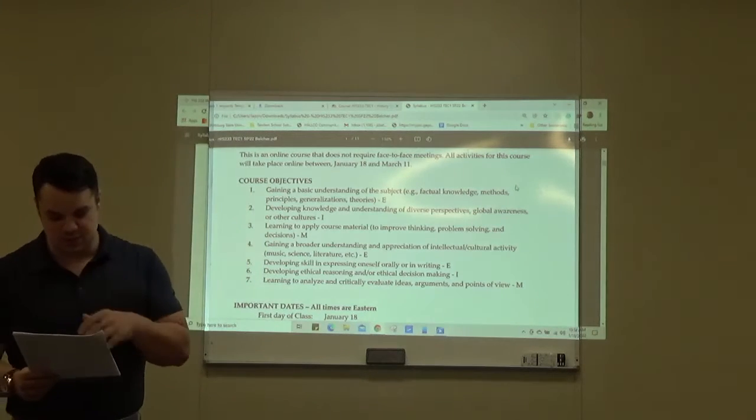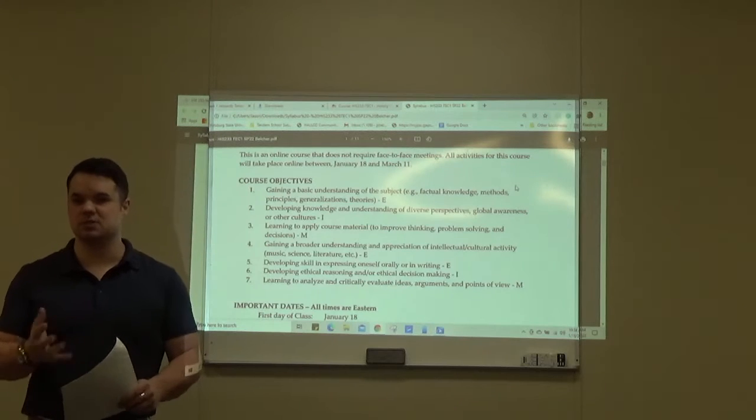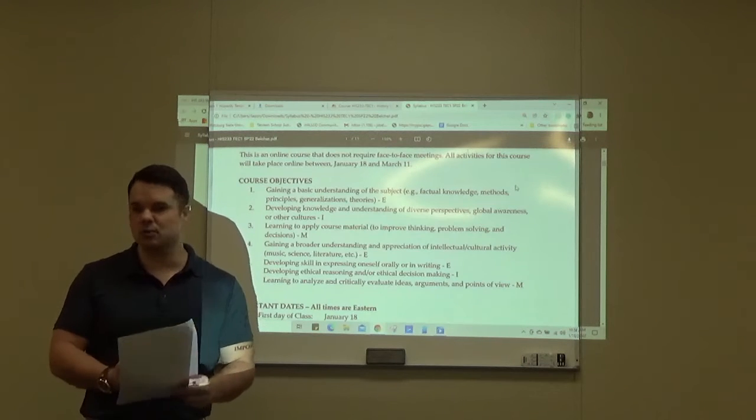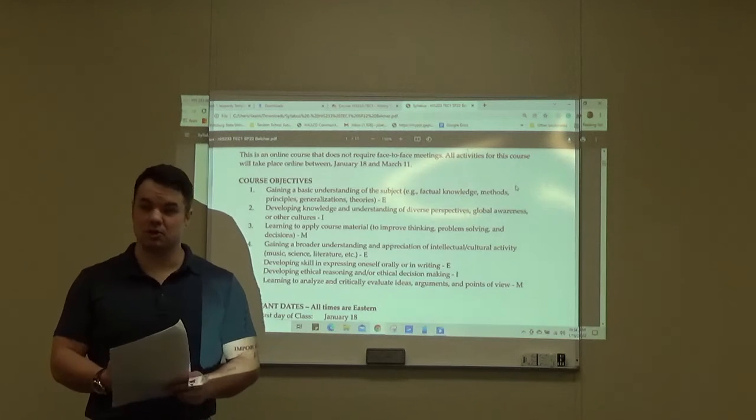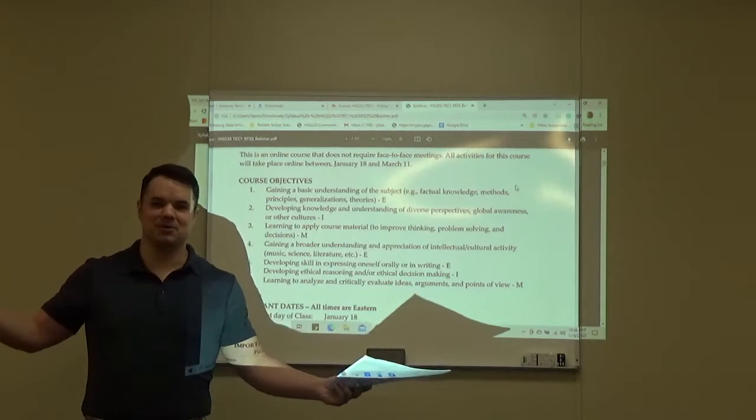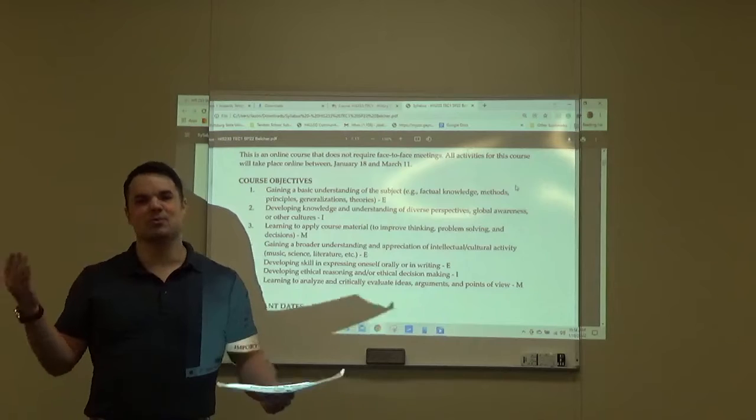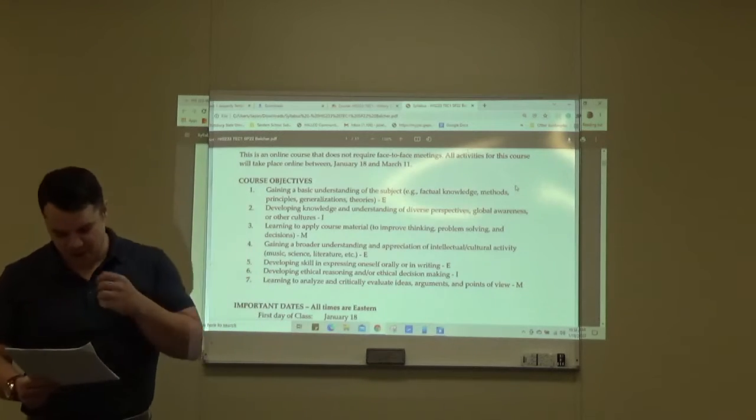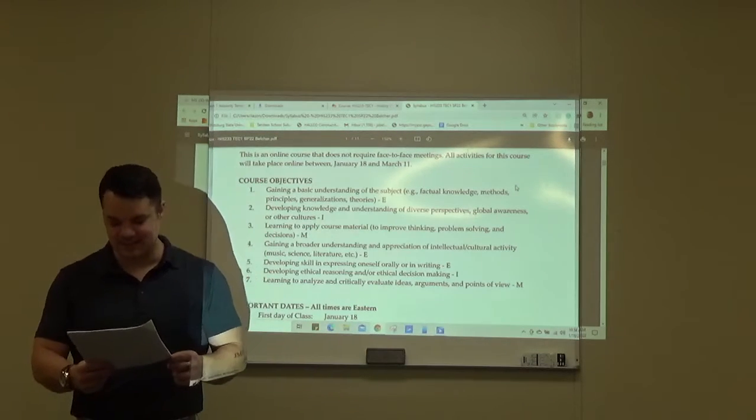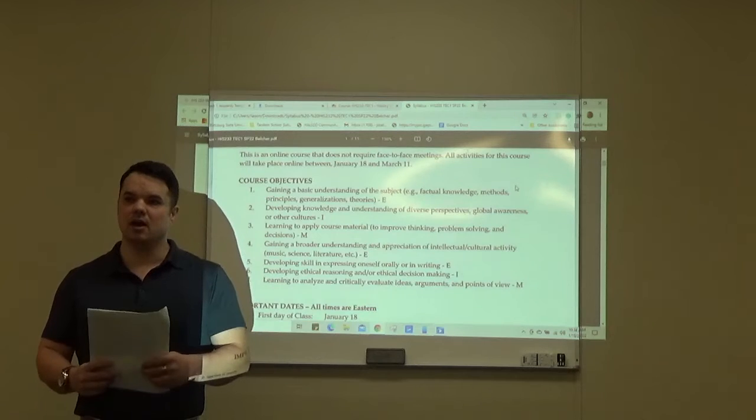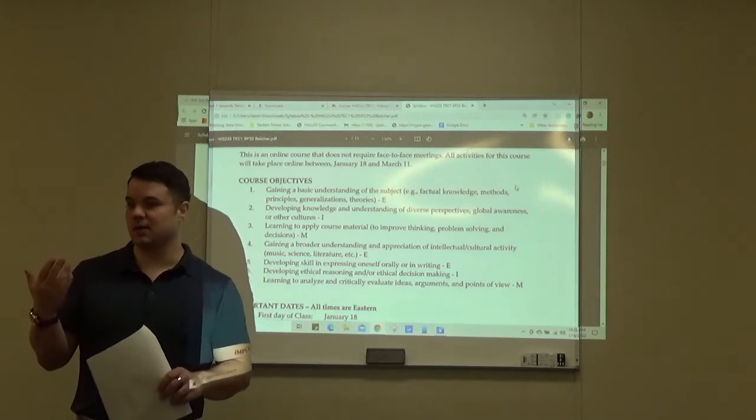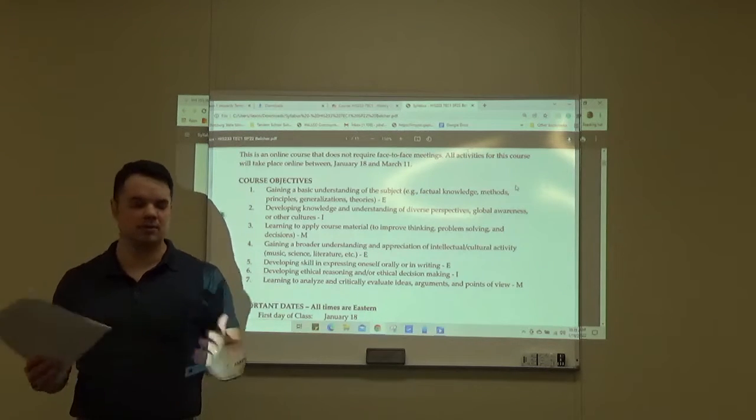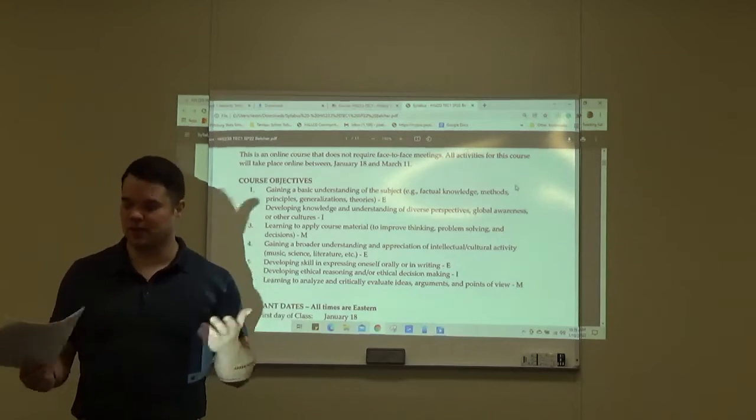Develop ethical reasoning and or ethical decision making. This one will actually be more in-depth on some of the weeks. This will be discussing some of the pretty controversial issues about America, essentially. Like, how did we become what we became? What were some of the darker sides of America? Slavery. That's a big one. We will definitely be getting into that for at least one to two weeks just because of Civil War, Reconstruction, and all that. Learning to analyze and critically evaluate ideas, arguments, and points of view. This will be a really good one to discuss because even if we talk about the Revolutionary War, I might ask you about the British point of view, the American point of view, the colonial point of view. Like, which side was justified? Were they both justified?